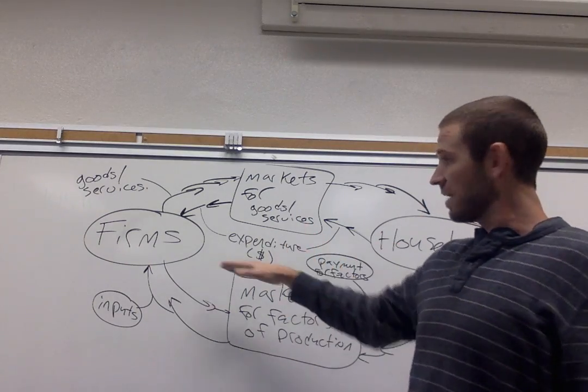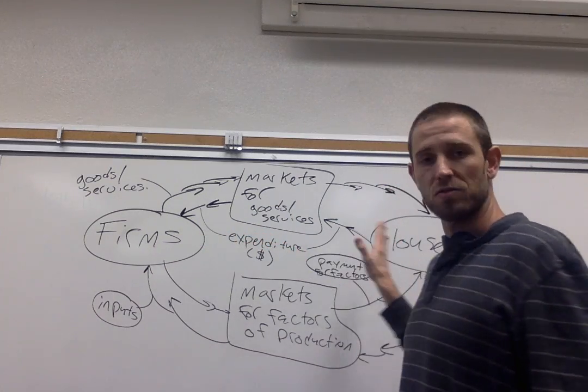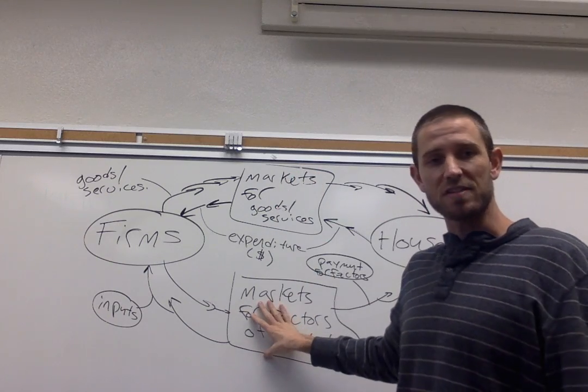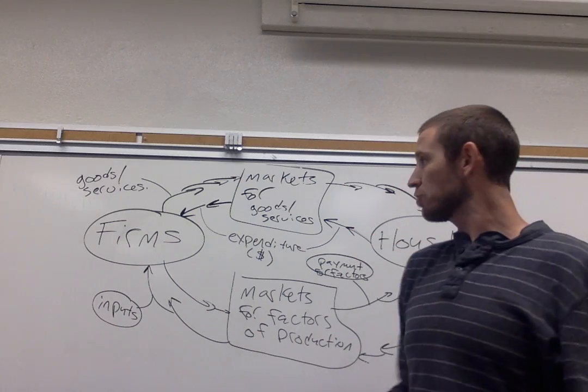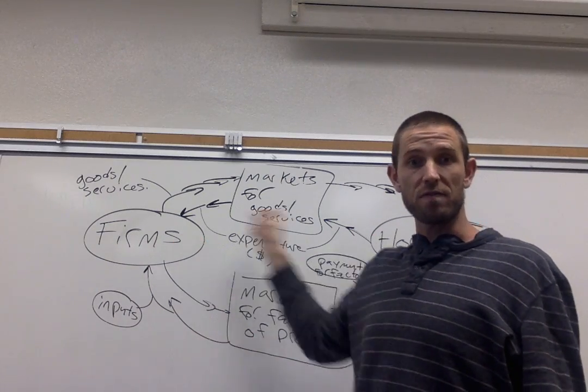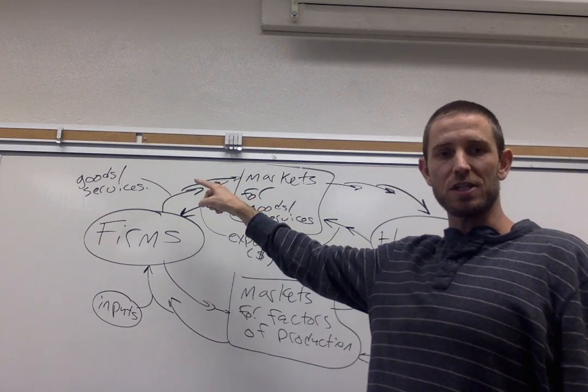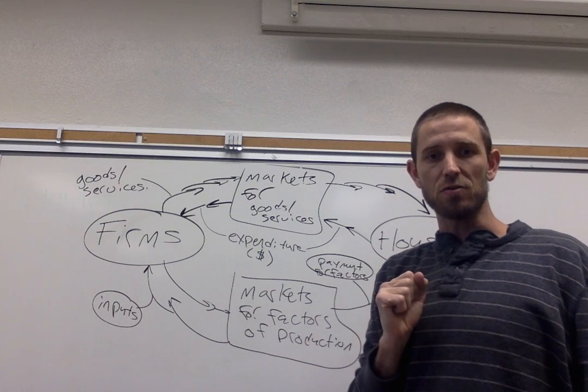One last thing to note, you can see that I've set up the circular flow diagram in this case with firms on the left and households on the right, and product markets up top and resource markets down below, but it wouldn't be wrong to reconfigure that. You could, if you wanted, put households over here and firms over here, or reconfigure it in any way, so long as you properly adjusted all of the arrows correspondingly, so that you're measuring these flows in the correct way.